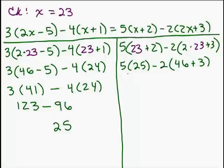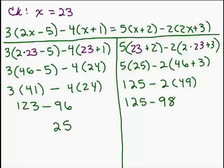Now, I can go ahead and do this 5 times 25. That is 125. But I need to still simplify inside these parentheses before I multiply by 2. So that's 49. So let's see what that gives us. 125 minus 98, which is also 25. So, yep, everything checked out just fine.